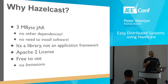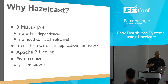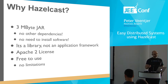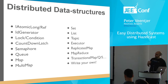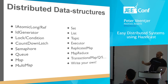It's a library, not an application framework, so you determine your architecture — we do not determine your architecture. We give advice on how to do it well, but you are in charge. We have an Apache 2 license, it's free to use, there are no limitations. You can create as many data structures as you want, as big as you want, with as many cluster members as you want. We provide a whole bunch of distributed data structures like atomic longs, ID generators, semaphores, queues, and maps. We also provide an application map, map-reduce mechanism, transactional data structures, and you can even create your own.